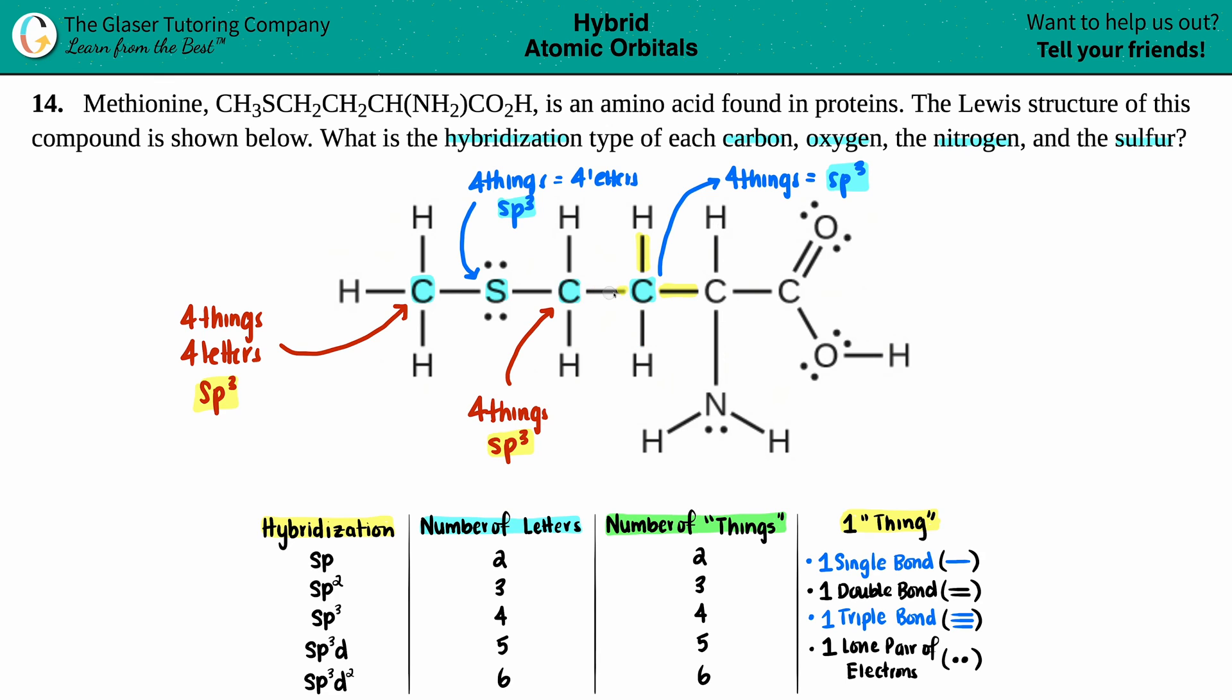Moving on. Next. This carbon. What's going on here? Single bond, that's one thing. Two things for the single bond. Three things for the single bond. Four things for the single bond. No lone pairs. Nothing else is attached to it. So that's four things. We know what that is. SP3.